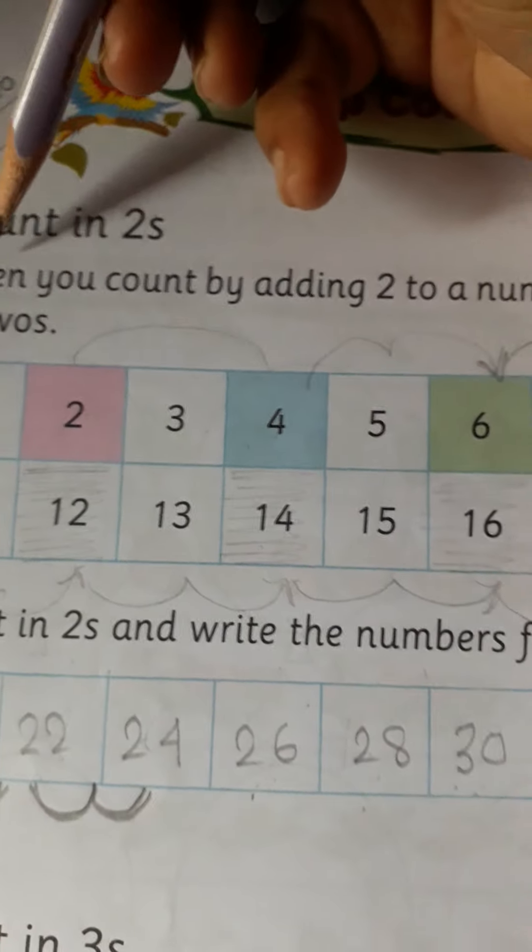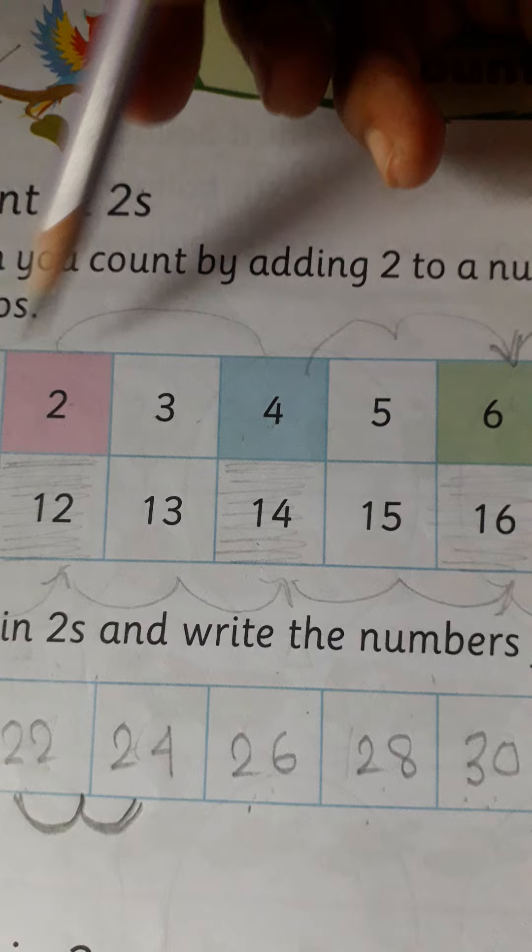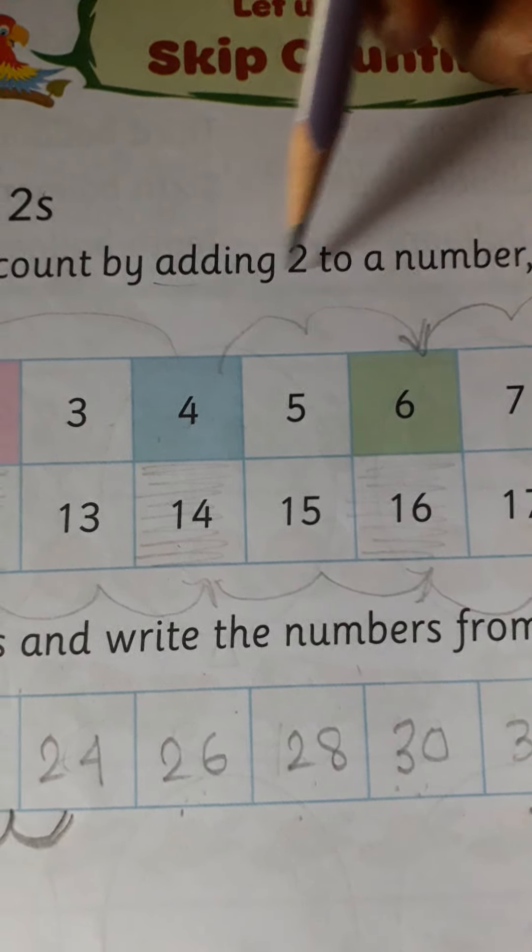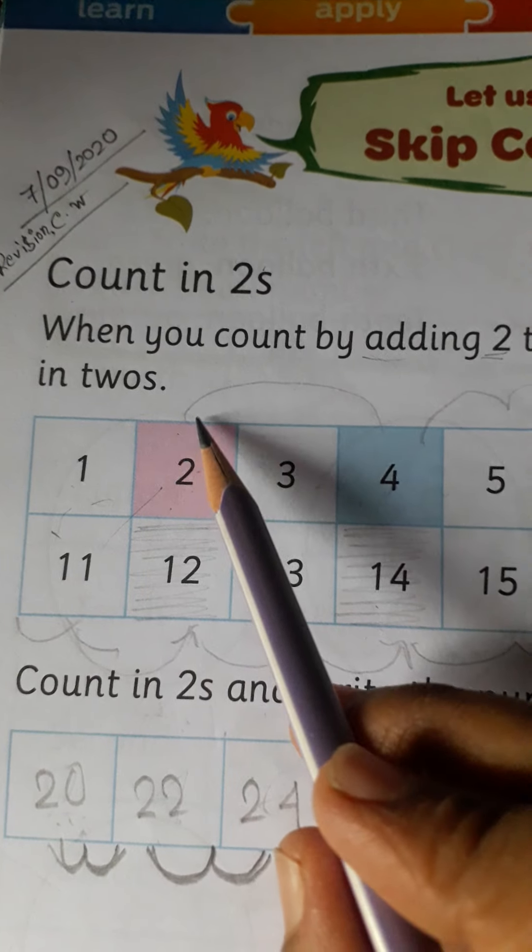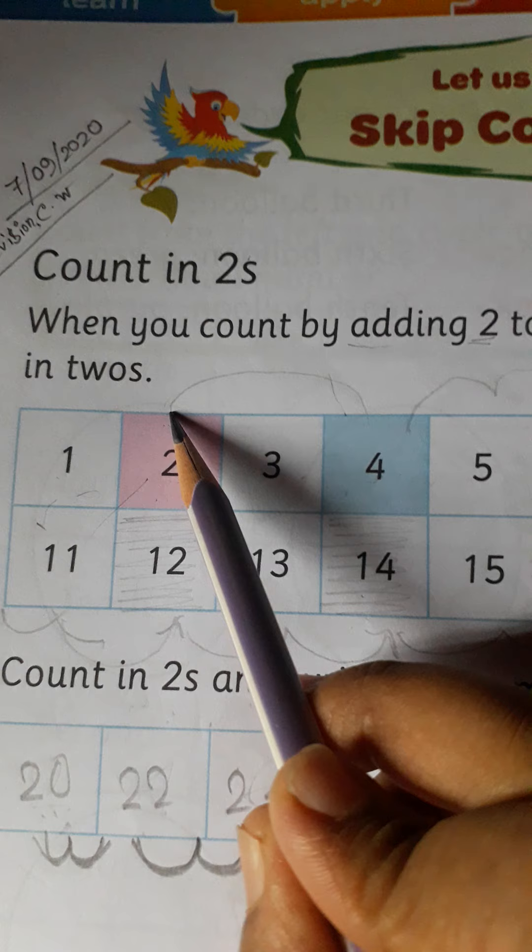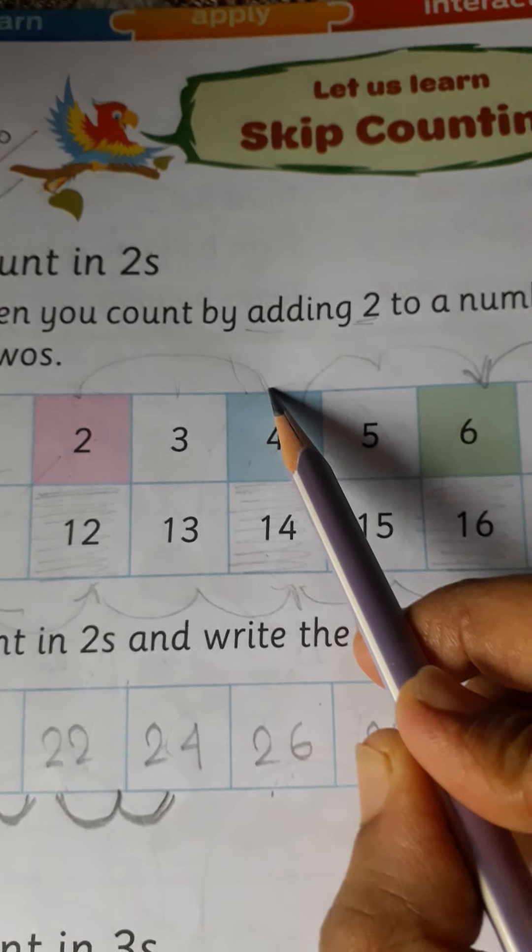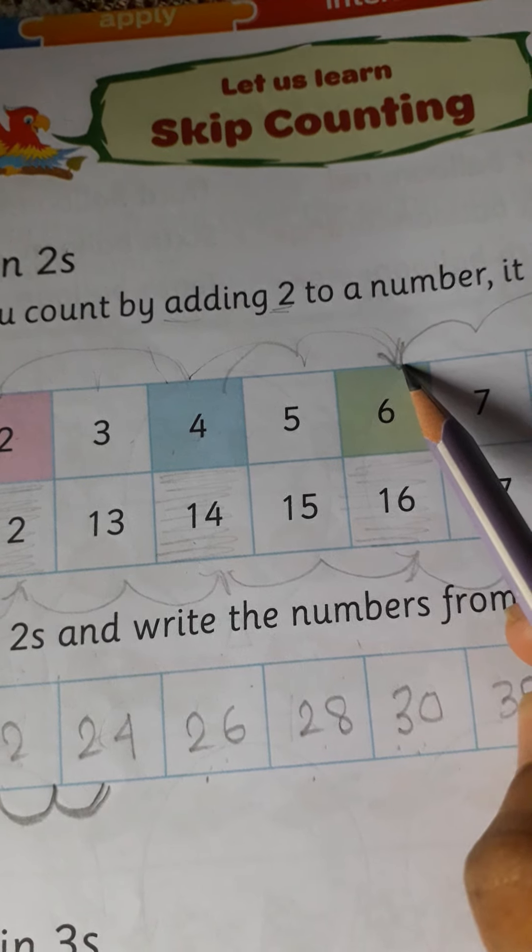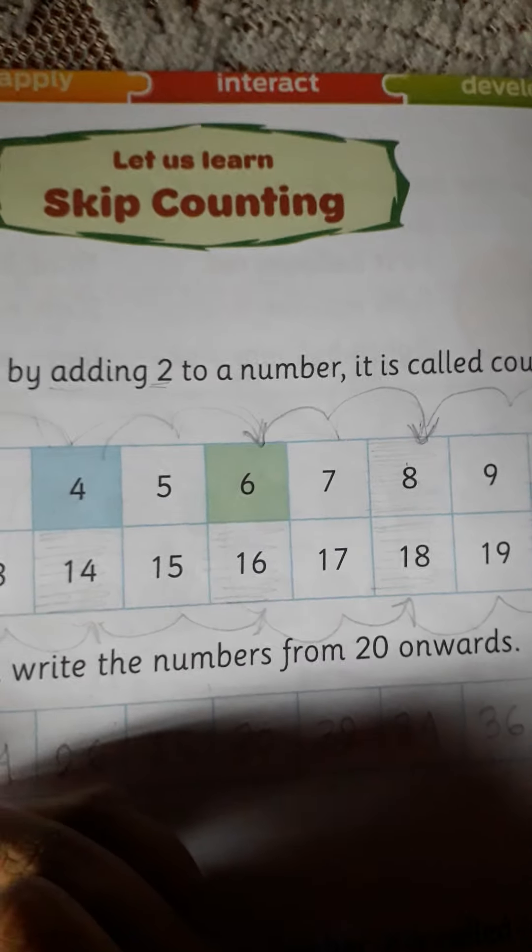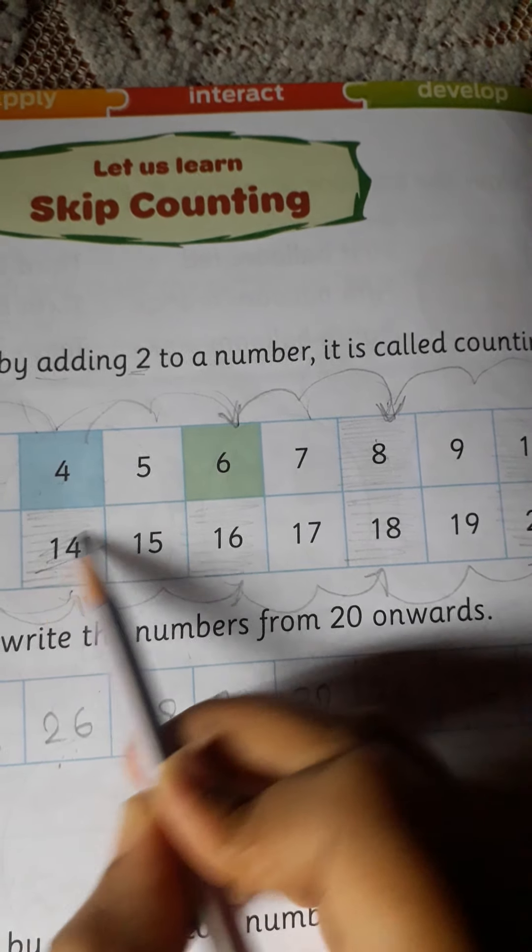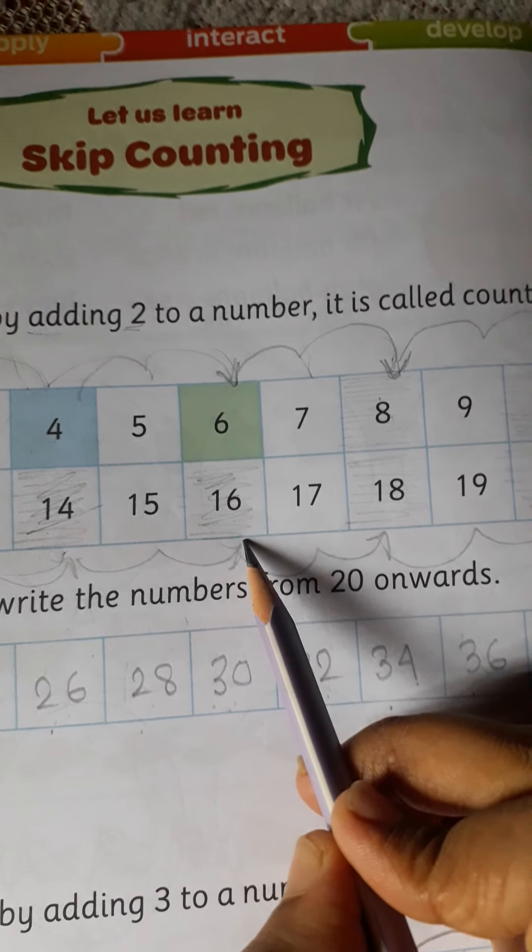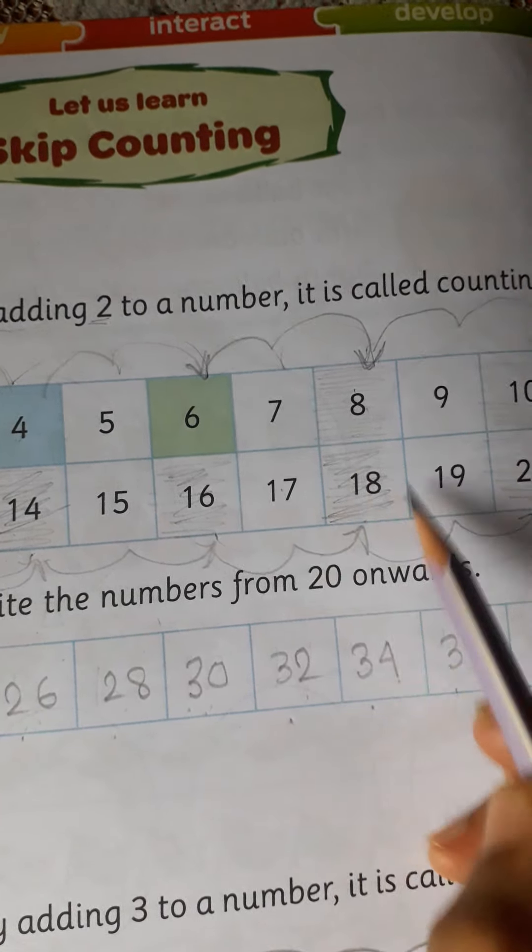The number count, count 1, 2, 1, 2 and add number, counting number. So first 1, 2 here and 2 plus, then 2 plus. Then 9, 10, then 10, 11, 12, then 13, 14 in 2s, 15, 16 in 2s, then 17, 18 in 2s, then 20.